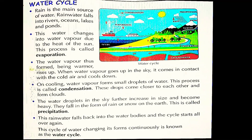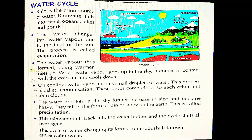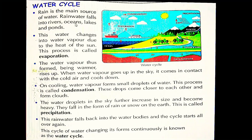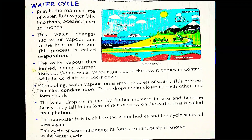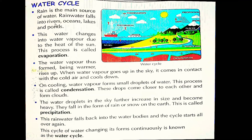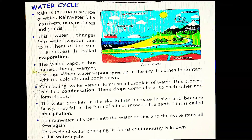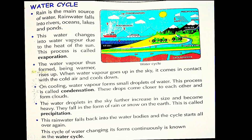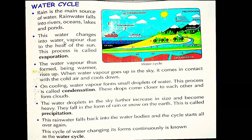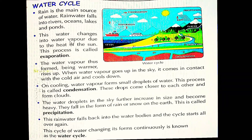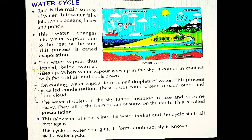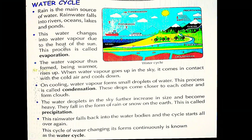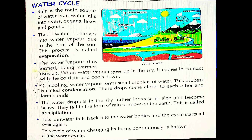Rain is the main source of water. Water cycle mein main source kya hai? Paani hai, of course. Rain water falls into rivers, oceans, lakes and ponds. Now this water changes into water vapour. This process is called evaporation.